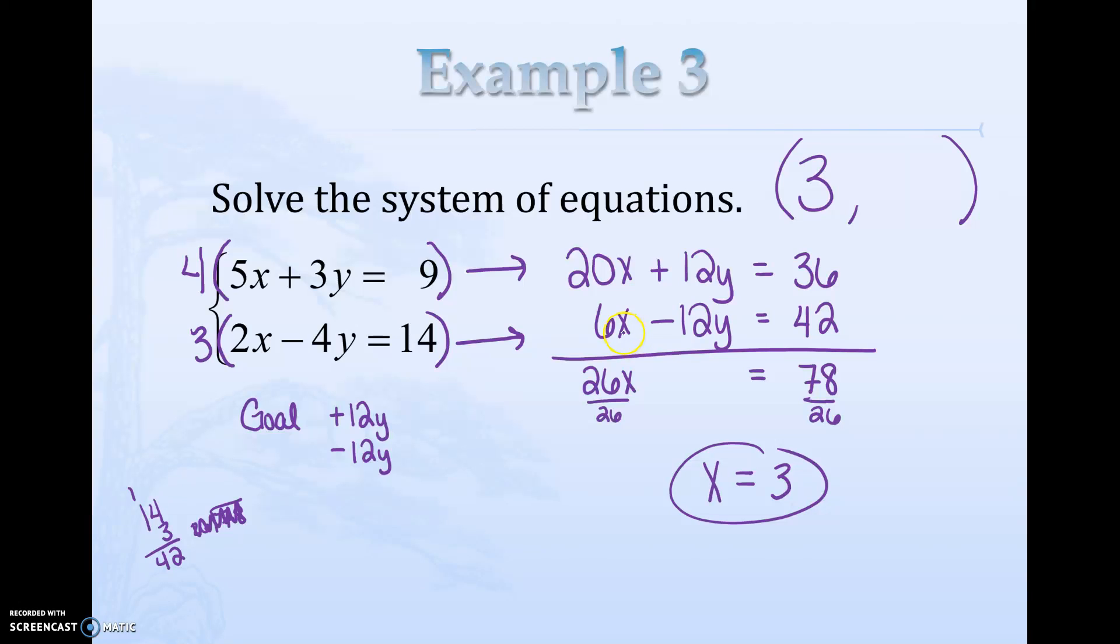I would look through this and pick the equation with the smallest numbers that has the fewest negatives possible. So I'm going to choose this equation, 5x plus 3y equals 9. I feel like that will be the easiest one to deal with. So 5 times 3 is 15, plus 3y equals 9.